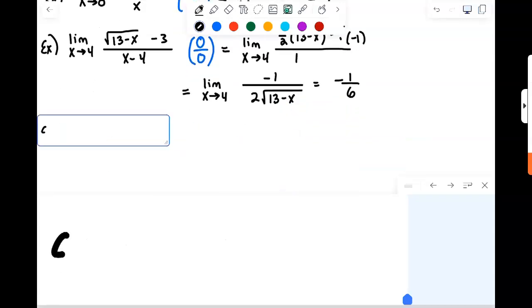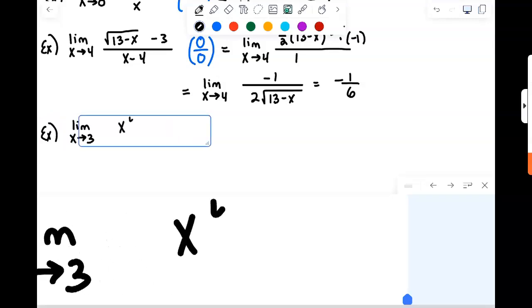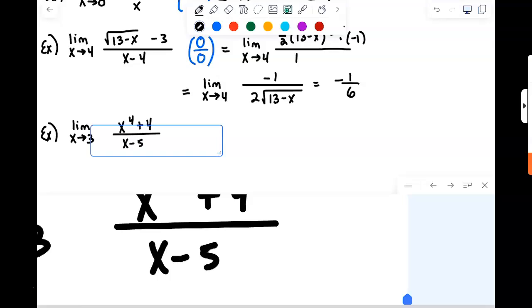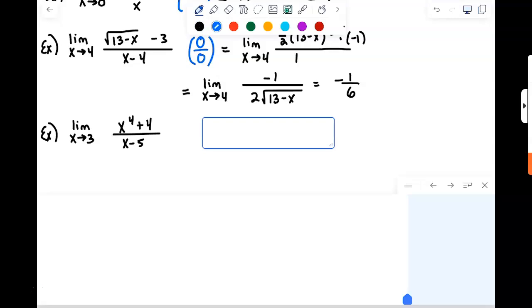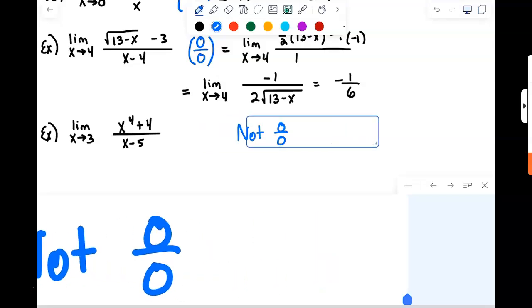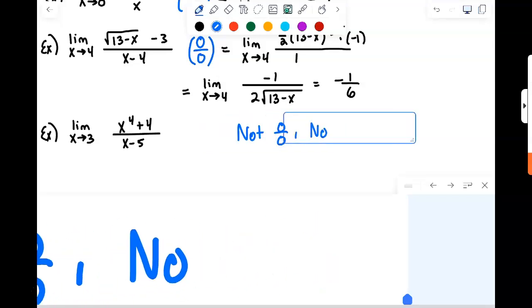Let's consider a second example here. Limit as X approaches 3 of X to the 4th plus 4 over X minus 5. Okay. Real quickly, if you try to evaluate that, it's not a 0 over 0 limit.